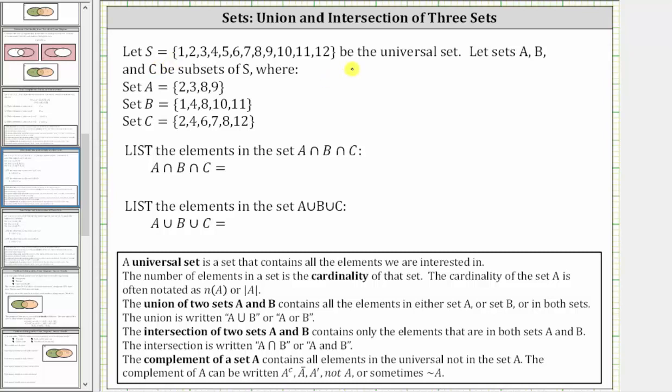We're told to let S be the universal set, where the set S contains the integers from one through twelve, and sets A, B, and C are subsets of S.